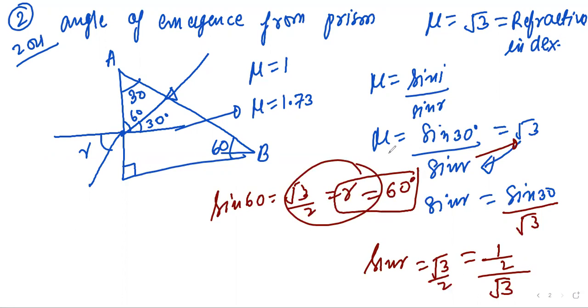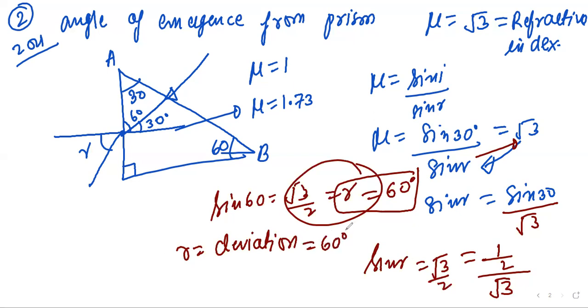The required deviation angle r is 60°. So the angle of emergence from the prism is 60°. Please write it down.